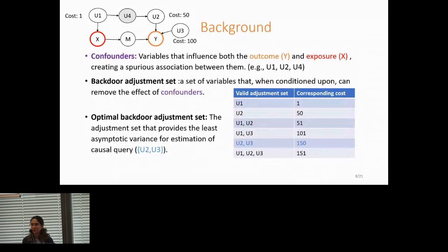Here, U2 and U3 is the optimal backdoor adjustment set, and I will not go into details of why that's the case. But note that the experimental cost associated with this optimal adjustment set is not necessarily the most cost-efficient choice. So being able to balance between variance and cost is really important, and it is one of the goals of my research.